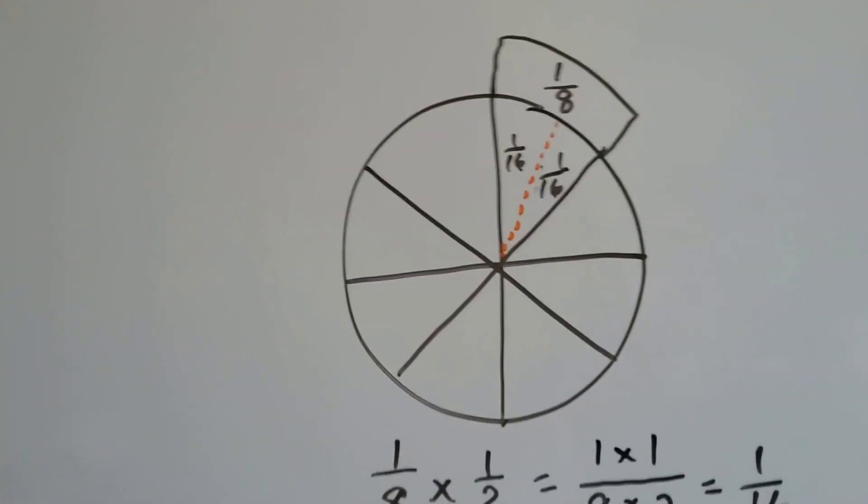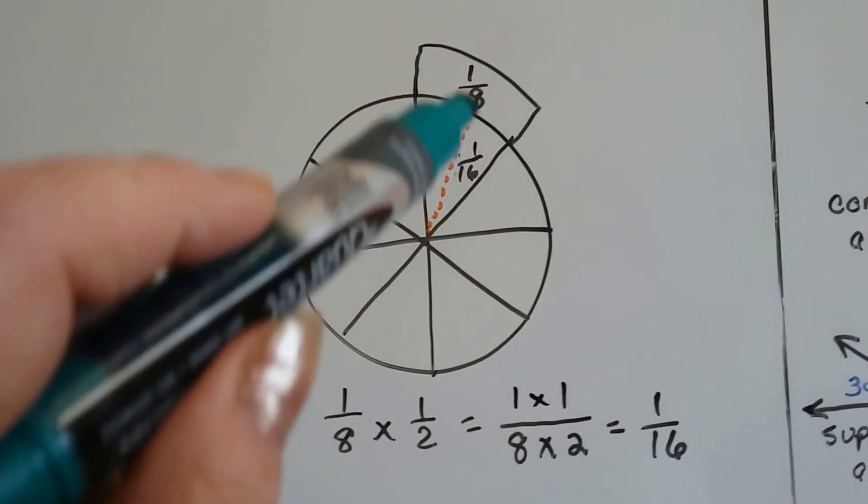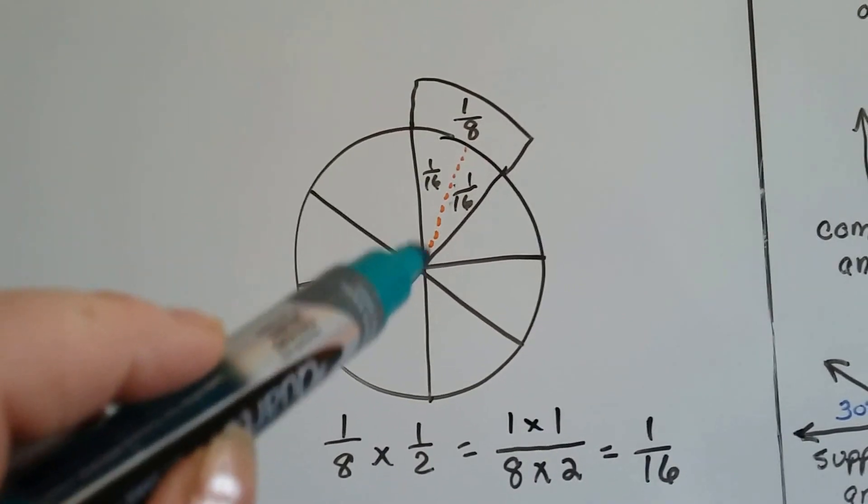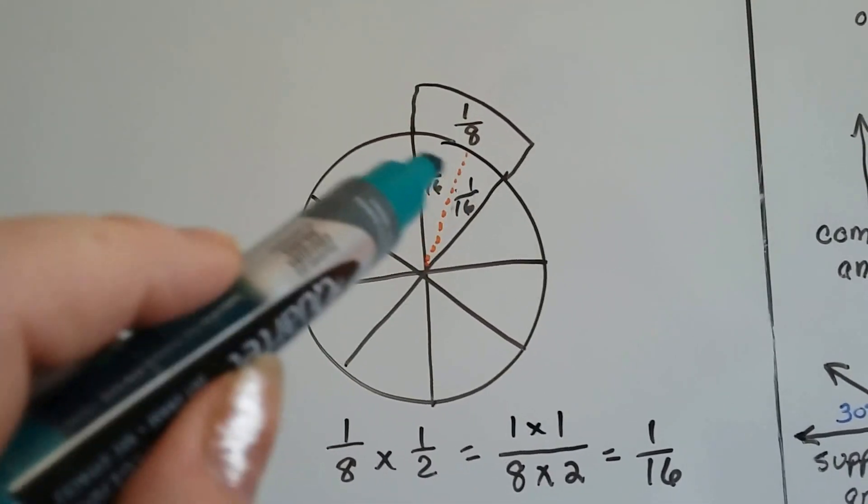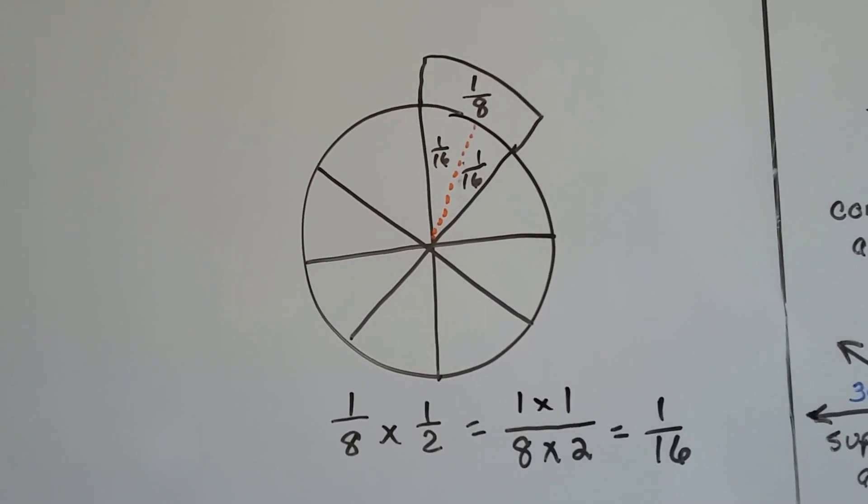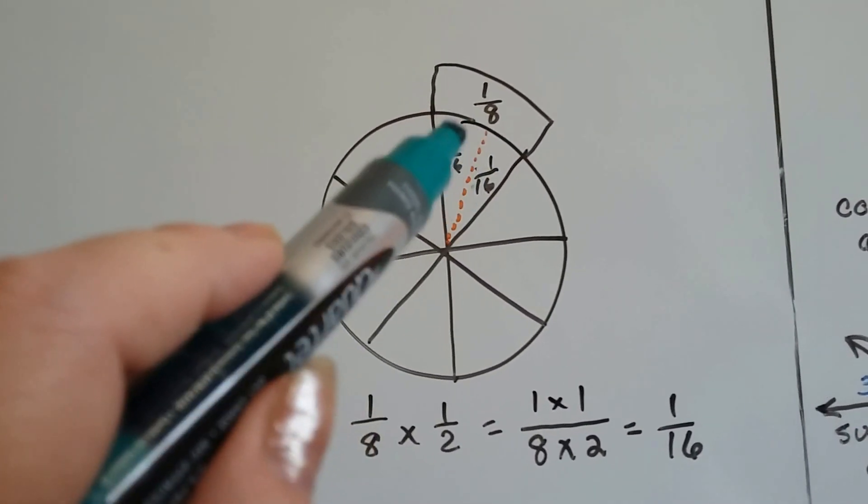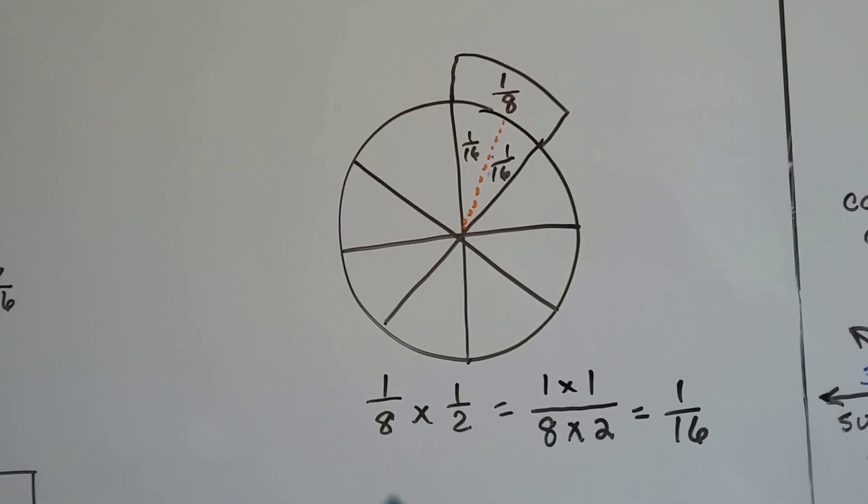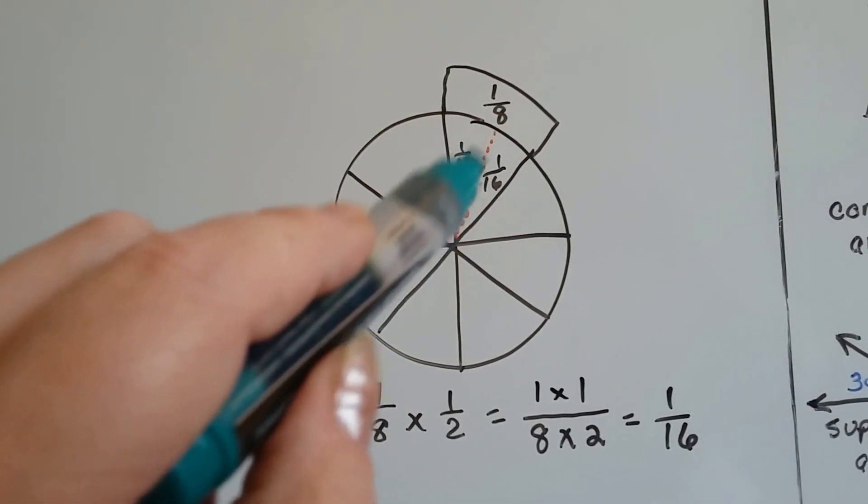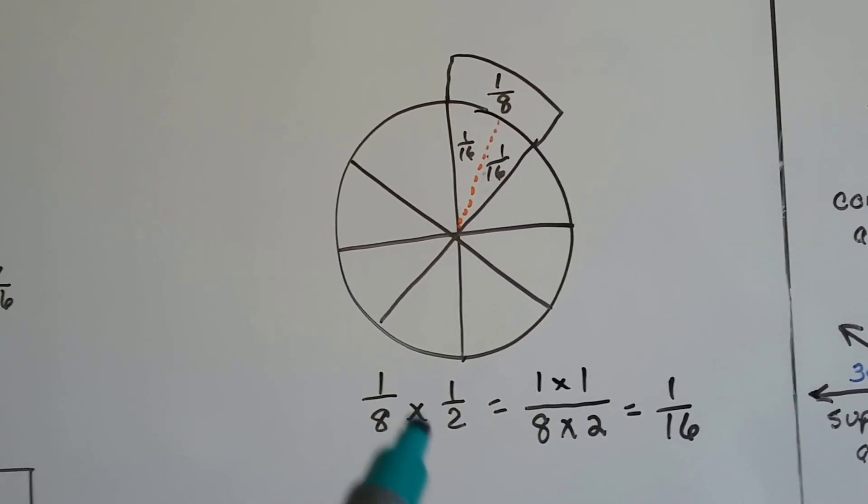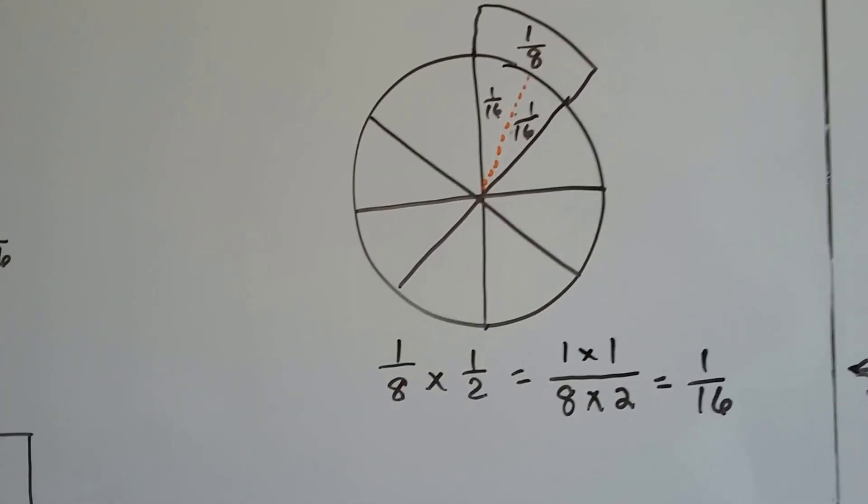If we have a circle cut into 8 parts, and we multiply 1 of the eighths by half, we cut it in half, they each become 2/16. A sixteenth and a sixteenth. 1/16 and 1/16 makes 2/16. That makes 1/8 when you add them. So 1/8 times 1/2 would be 1/16. It's 1 times 1 over 8 times 2. 1/16.